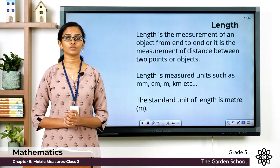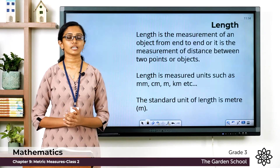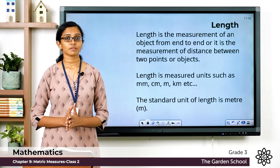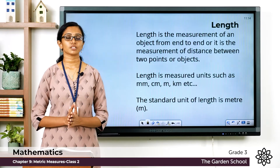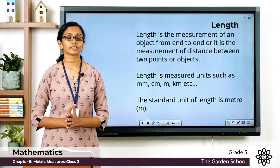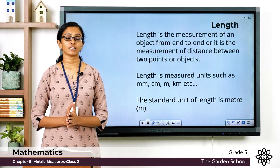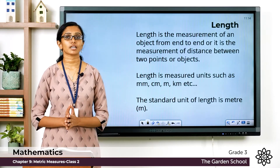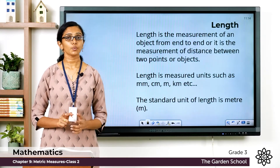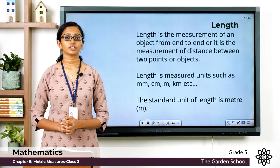Length is usually measured using tools such as a measuring tape or a ruler. Smaller lengths can be measured using units such as millimeters and centimeters. Longer lengths can be measured using meters, and geographical lengths like the distance between two places can be measured in kilometers.